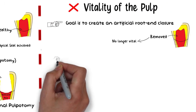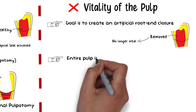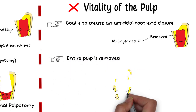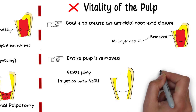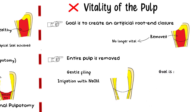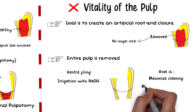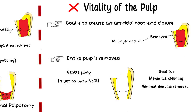In Apexification, the entire necrotic pulp is removed, and this removal of the entire pulp is known as pulpectomy. The removal of the pulp is done with gentle circumferential filing along with irrigation with 1.25% sodium hypochlorite. The objective is to maximize cleaning by disrupting biofilms on the canal walls along with irrigation and minimal dentinal removal. The entire pulp has to be removed because it is necrotic and therefore unable to sustain continued growth of the tooth.